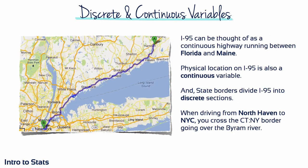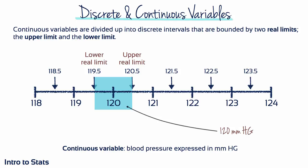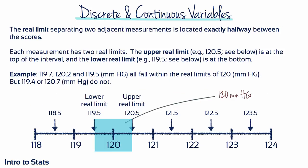Another way of explaining this: the I-95 can be thought of as a continuous highway running between Florida and Maine. Physical location on I-95 is a continuous variable, and state borders divide the I-95 into discrete sections. When driving from North Haven to New York City, you cross the Connecticut-New York border going over the Byram River. The arterial pressure category of 120 mmHg is an interval defined by two real limits — a lower limit of 119.5 and an upper limit of 120.5. Values of 119.7, 120.2 and 119.5 all fall within those real limits, but 119.4 or 120.7 do not.